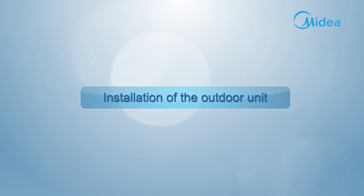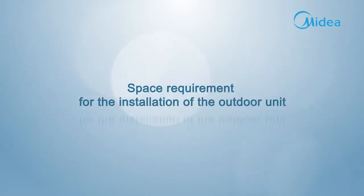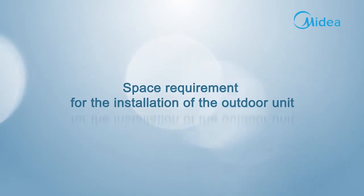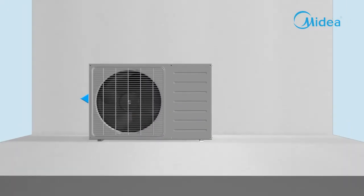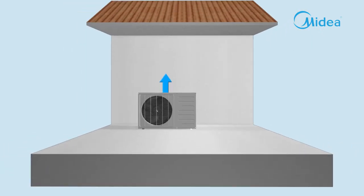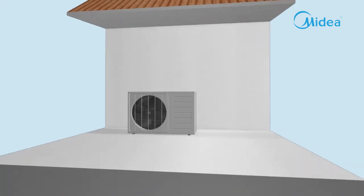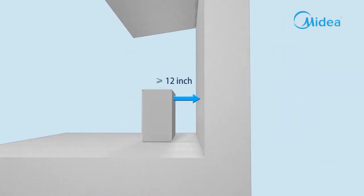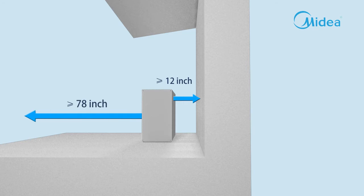Installation of the outdoor unit. Space requirements: no less than 12 inches for left space, 24 inches for right space, 24 inches for upper space, 12 inches for back space, and 78 inches for front space.